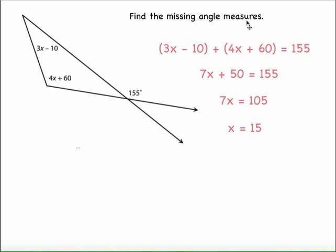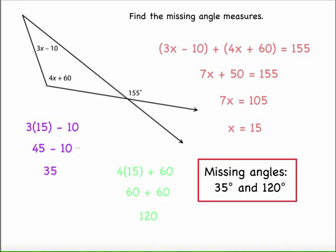Since it asked us to find the missing angle measures, I'm going to plug 15 back into both expressions for X. When I replace X with 15 in the 3x minus 10, I get a total of 35 degrees. And 4x plus 60, when X is 15, gives me 120 degrees. So I know my two missing angle measures, and I'm done with this problem.